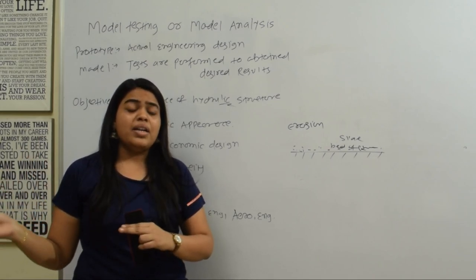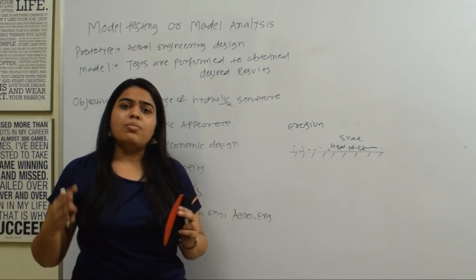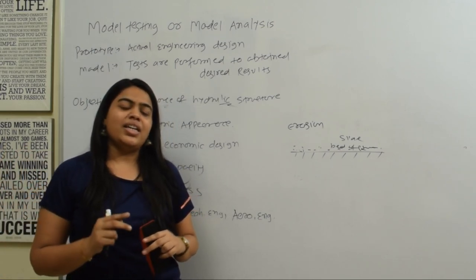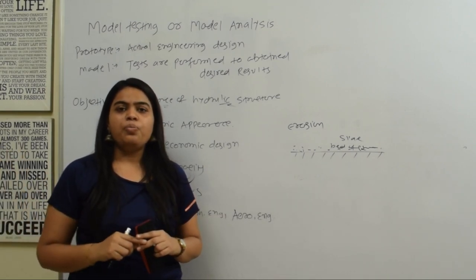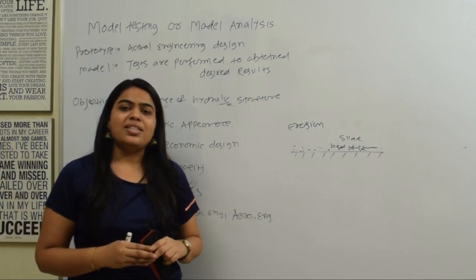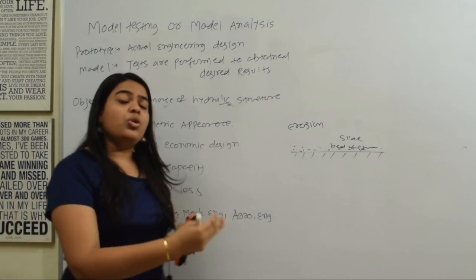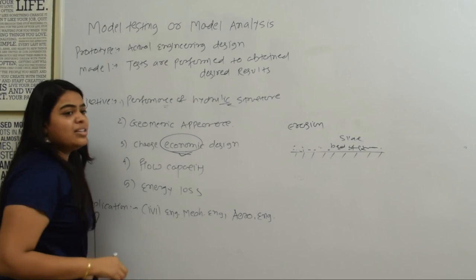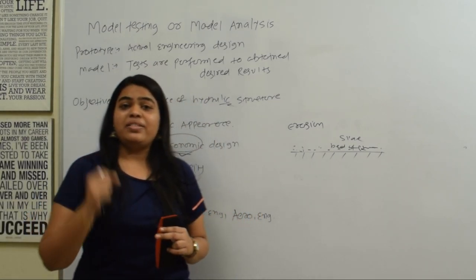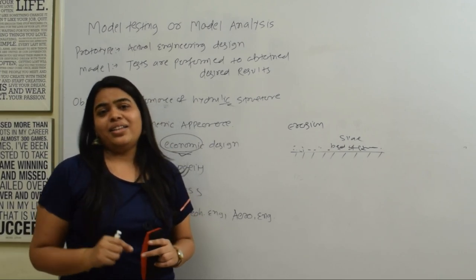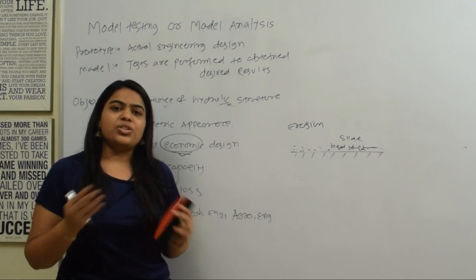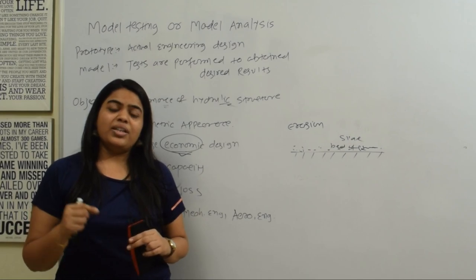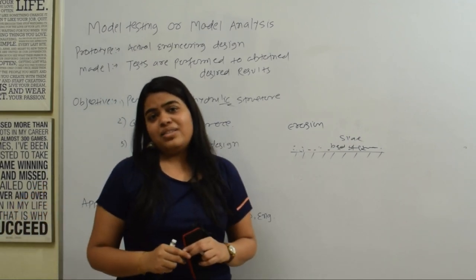For civil engineering, models of dams are actually built — the model is made, tested, and then the full structure is designed based on those results. We also call the best efficiency structure one that is economical. As an engineer, we need to do construction or pump design, and the beauty of our work is that whatever structure we are building achieves the required efficiency at an economical price.